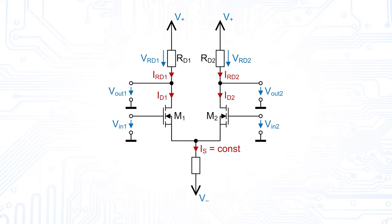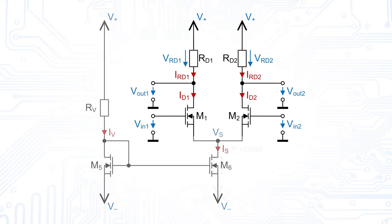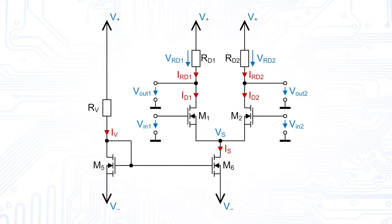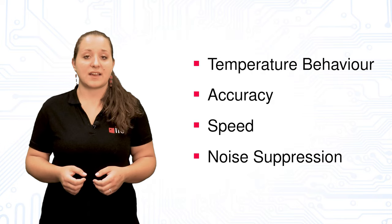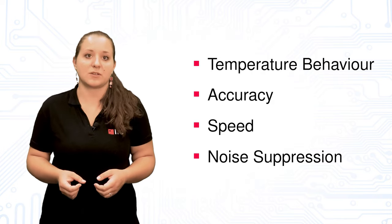For example, we could change our very simple current source, which up until now was a resistor, to a more accurate one like a current mirror. Such a current mirror can also replace our drain resistances, which will result in a better common mode rejection ratio. There are many more possibilities to improve the circuit, not only regarding its common mode rejection ratio, but also its temperature behavior, accuracy, speed or noise suppression. But discussing all of them would go way beyond the scope here.